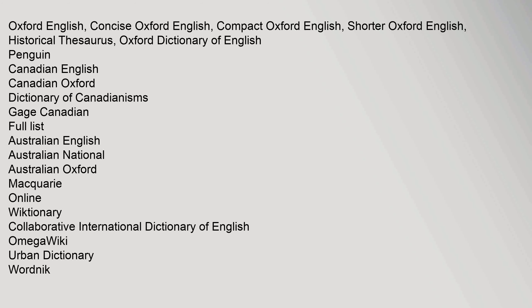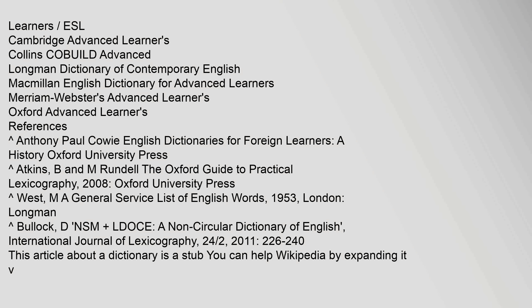Further British English dictionaries include Concise Oxford English, Compact Oxford English, Shorter Oxford English, Historical Thesaurus, Oxford Dictionary of English, Penguin. Canadian English dictionaries include the Canadian Oxford Dictionary of Canadianisms and Gage Canadian. Australian English dictionaries include Australian National, Australian Oxford, and Macquarie. Online and collaborative dictionaries include Wiktionary, the Collaborative International Dictionary of English, OmegaWiki, Urban Dictionary, and Wordnik. Learner's ESL dictionaries include Cambridge Advanced Learners, Collins Cobuild Advanced, Longman Dictionary of Contemporary English, Macmillan English Dictionary for Advanced Learners, Merriam-Webster's Advanced Learners, and Oxford Advanced Learners. References include Anthony Paul Cowie, English Dictionaries for Foreign Learners: A History, Oxford University Press.